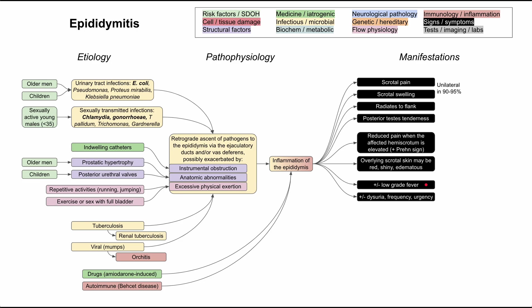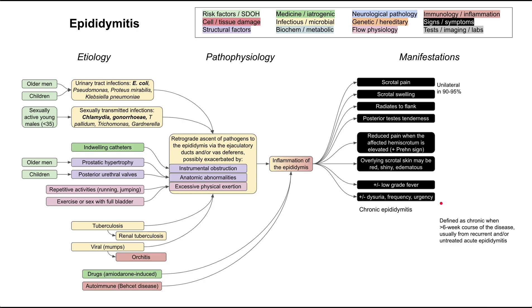Other manifestations that might or might not be present include a low-grade fever, which is more common in children. Patients can also have UTI symptoms such as pain with urination, dysuria, urinary frequency, and urinary urgency. Chronic epididymitis is defined as at least a six-week course of disease, usually from recurrent or untreated acute epididymitis. In chronic cases, you have recurrent bouts of pain, a thickened epididymis on physical exam, and typically minimal swelling compared to the acute case.